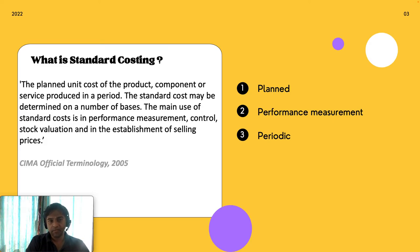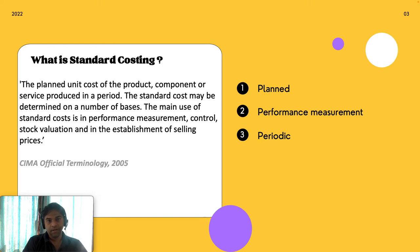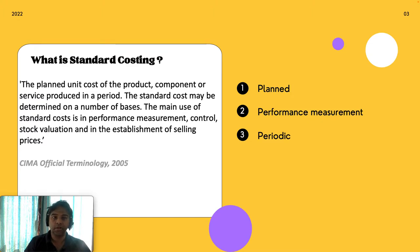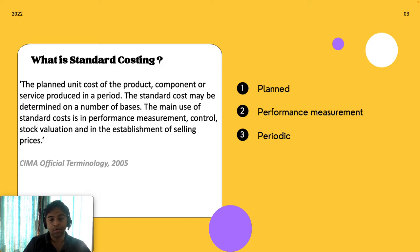For the definition, we'll refer to CIMA — the Chartered Institute of Management Accountants, UK — for both standard costing and variance analysis. The CIMA definition of standard costing is: 'The planned unit cost of the product, component, or service produced in a period. The standard cost may be determined on a number of bases. The main use of standard cost is in performance measurement, control, stock valuation, and in the establishment of selling prices.'